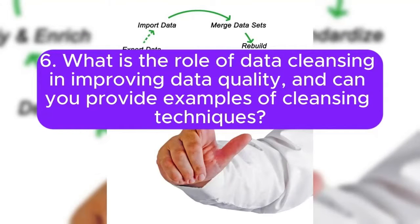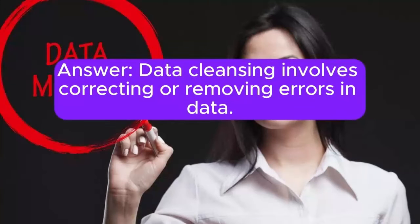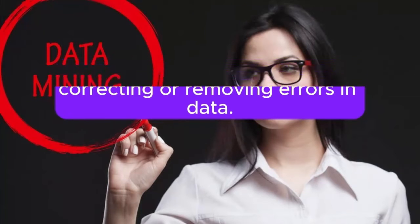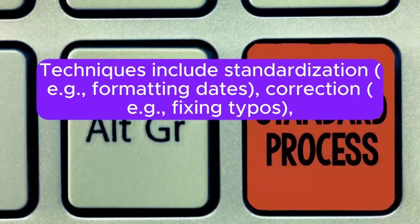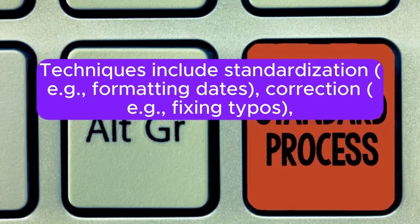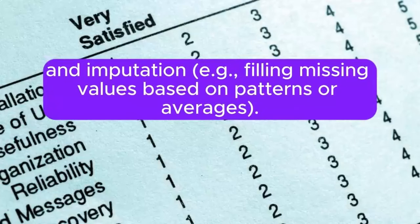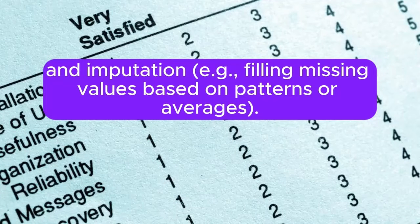6. What is the role of data cleansing in improving data quality, and can you provide examples of cleansing techniques? Answer: Data cleansing involves correcting or removing errors in data. Techniques include standardization (e.g., formatting dates), correction (e.g., fixing typos), and imputation (e.g., filling missing values based on patterns or averages).